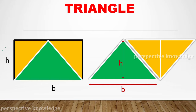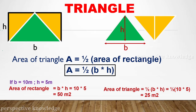So the triangle in green is equal to half the rectangle. The triangle placed on the rectangle shows that the triangle takes the green color. If we consider the area of the triangle, the rectangle is equal to half times the rectangle. So we multiply by half — that is the area of the rectangle b into h. Therefore, the area of the triangle A is equal to half into the area of the rectangle, b into h. So area of triangle is equal to half bh.